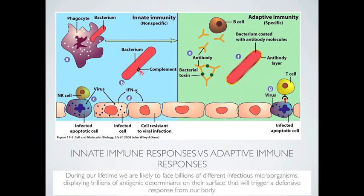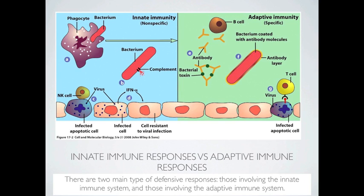During our lifetime, we are likely to face billions of different infectious microorganisms, displaying trillions of antigenic determinants on their surface. That will trigger a defensive response from our body. There are two main types of defensive responses: those involving the innate immune system and those involving the adaptive immune system.